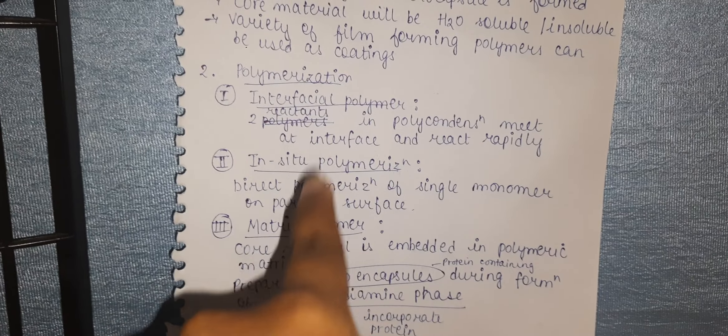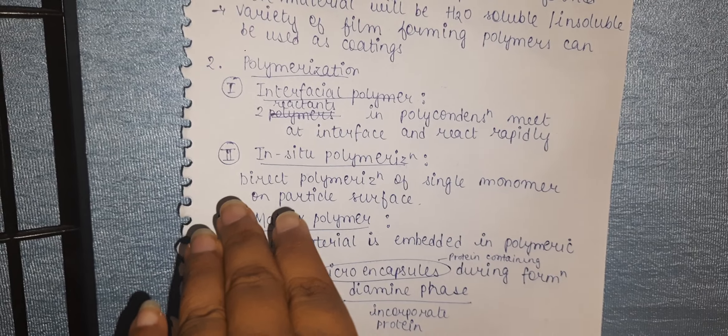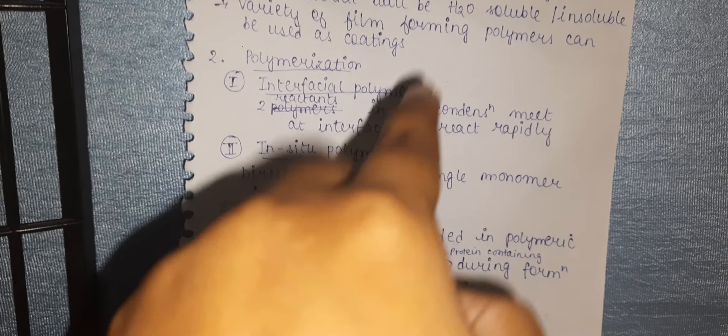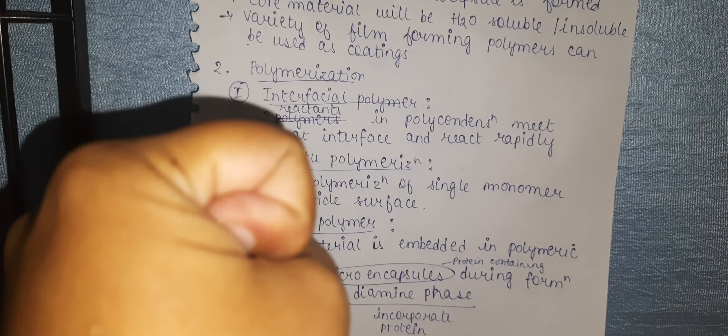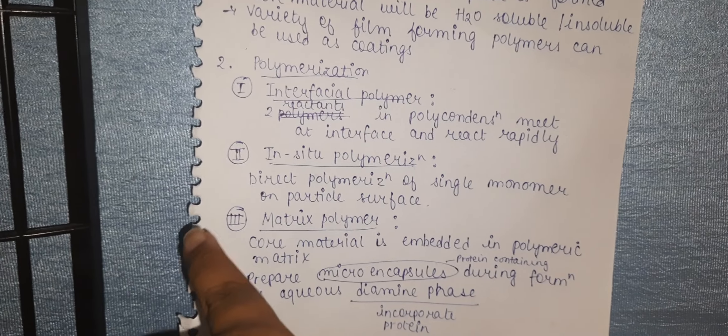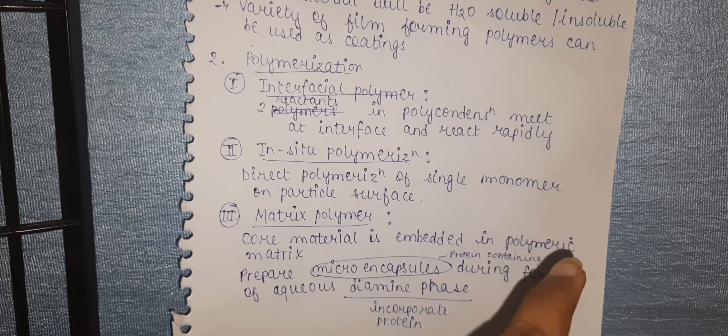In-situ polymerization, also known as direct polymerization, involves a single monomer present on the surface of the particle that directly polymerizes. Third is matrix polymerization, where the core material is embedded in the polymer matrix.